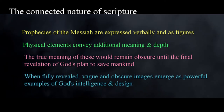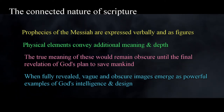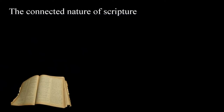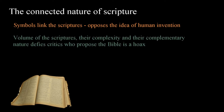When that revelation became a reality, vague and obscure physical images would take their place as powerful examples of a higher intelligence that crafted them. Symbols in the Bible exist to link the scriptures together and do so in a way that opposes the idea that humans invented them. The sheer volume of the scriptures, their complexity, and the seamless way in which they complement one another defies critics and those who propose that the Bible is merely a monumental hoax. To a rational person, that doesn't make sense and can't be defended when the scriptures are seen in their entirety in the context of passages, books, and the Bible itself.